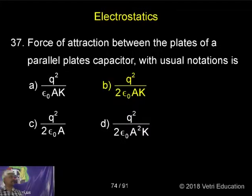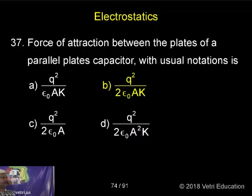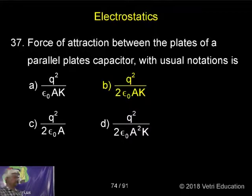Force of attraction between the plates of a parallel plate capacitor, with the usual notation: Q squared by 2 epsilon naught A K. This is a standard question.